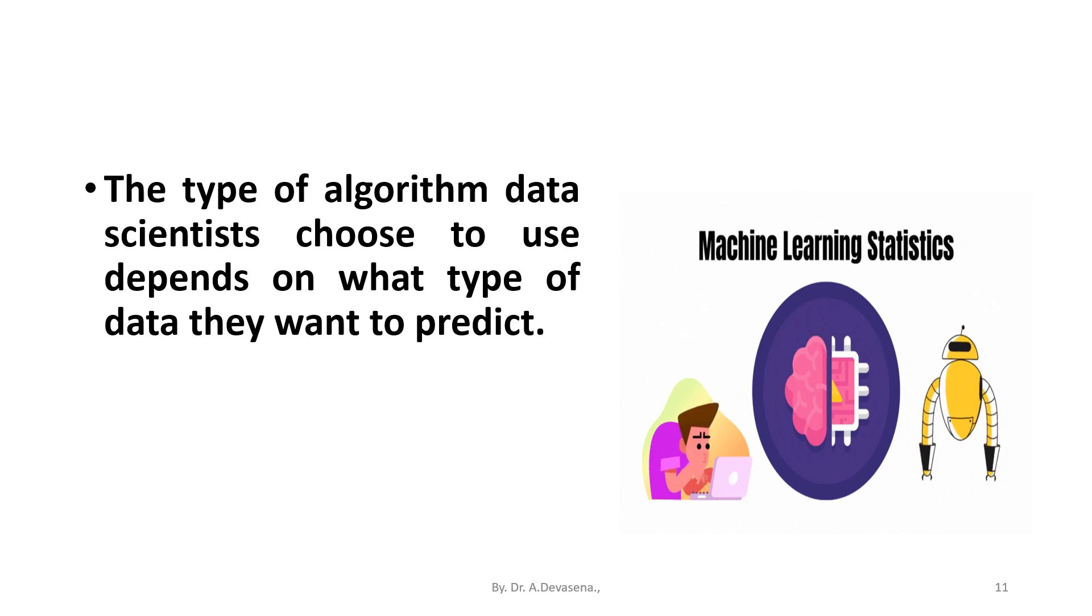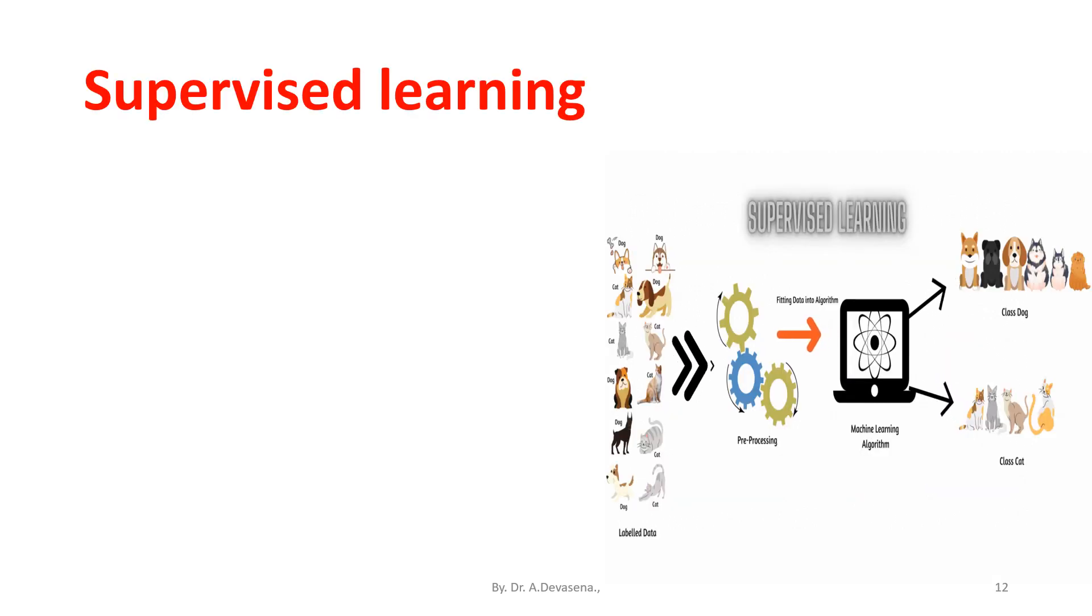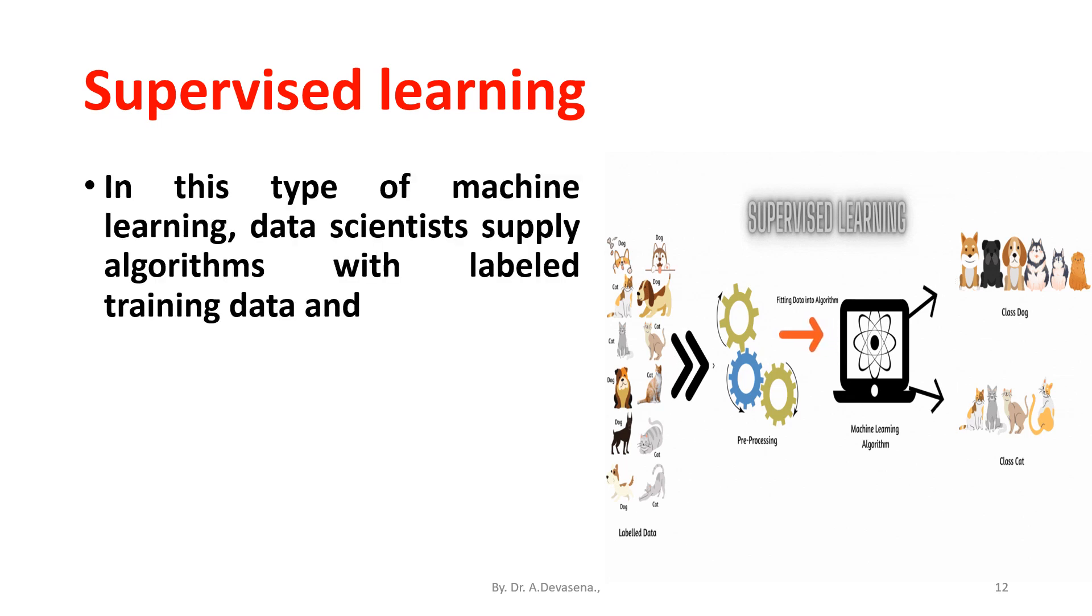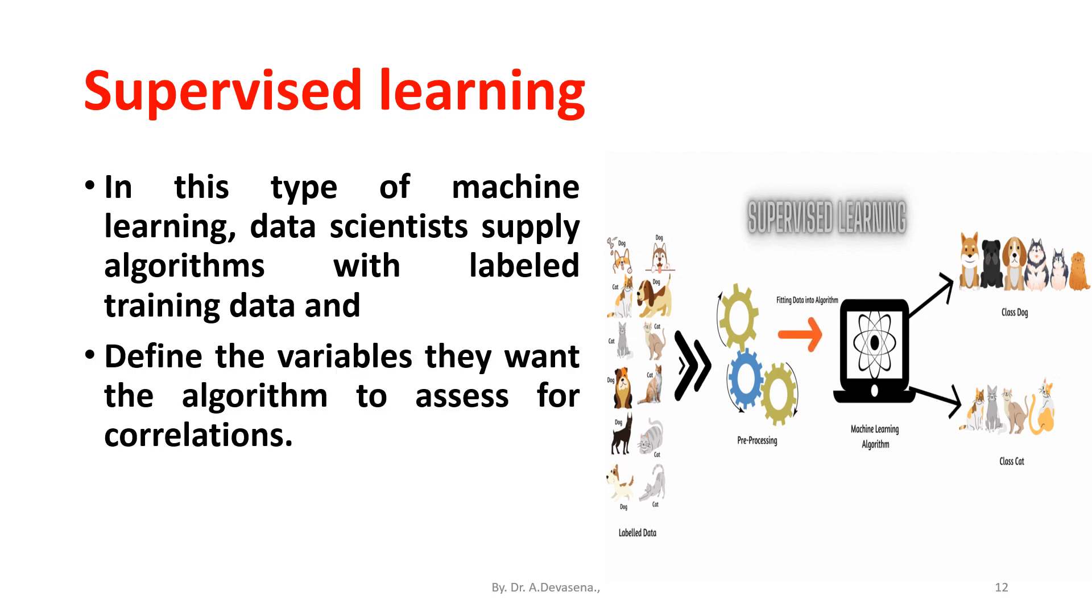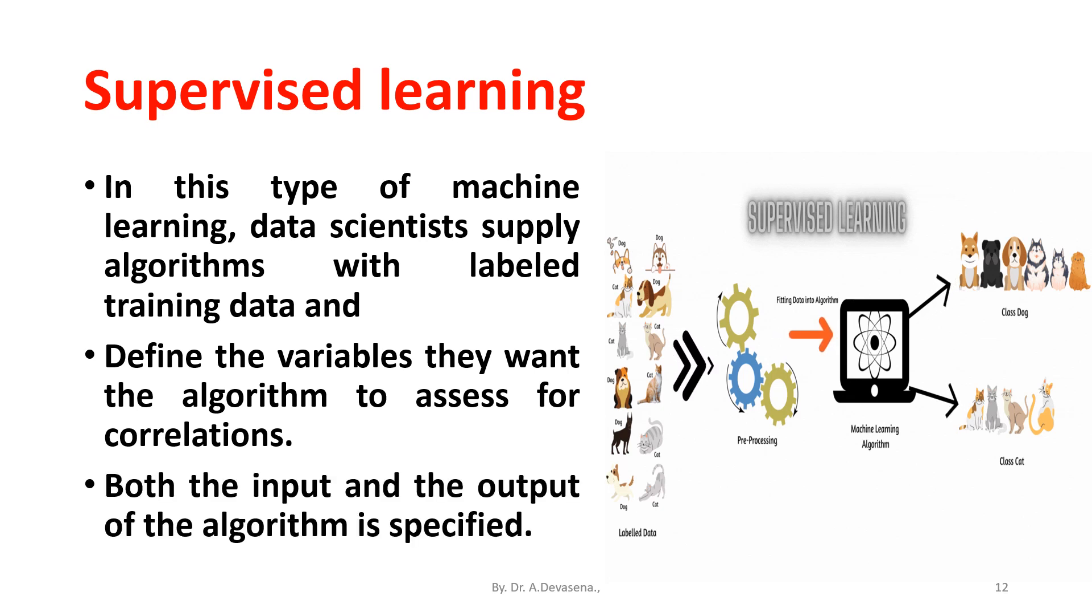The type of algorithm data scientists choose to use depends on what type of data they want to predict. Supervised learning: in this type, data scientists supply algorithms with labeled training data and define the variables they want the algorithm to assess for correlations. Both the input and the output of the algorithm are specified in supervised learning.